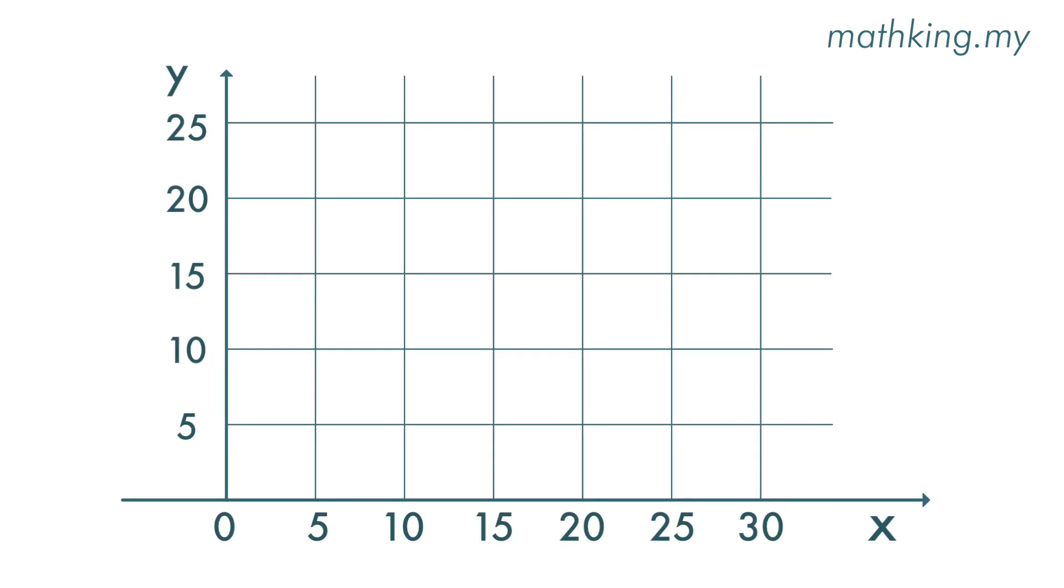As for the graph, when x is 30, y is 10. When x is 20, y is 15. When x is 10, y is 20. When x is 0, y is 25.